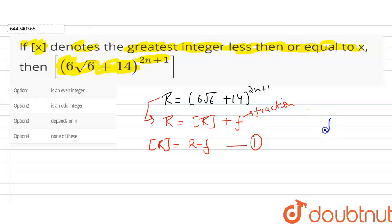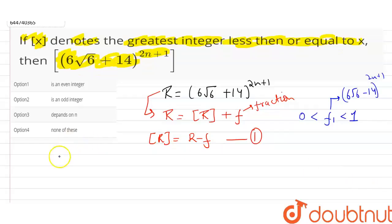Let us take another function f₁ which is (6√6 - 14)^(2n+1), and this is between 0 and 1. So (6√6 + 14)^(2n+1) minus (6√6 - 14)^(2n+1), this is nothing but R - f₁.